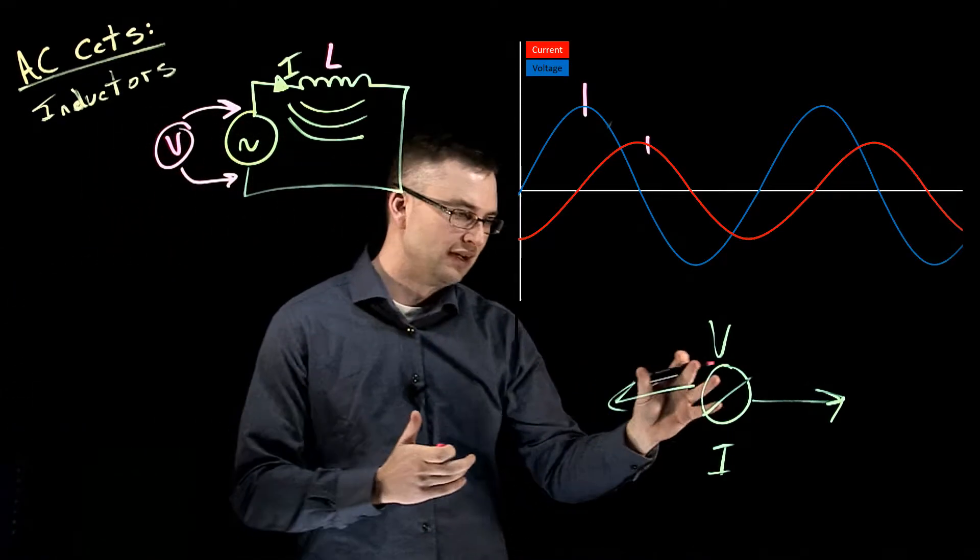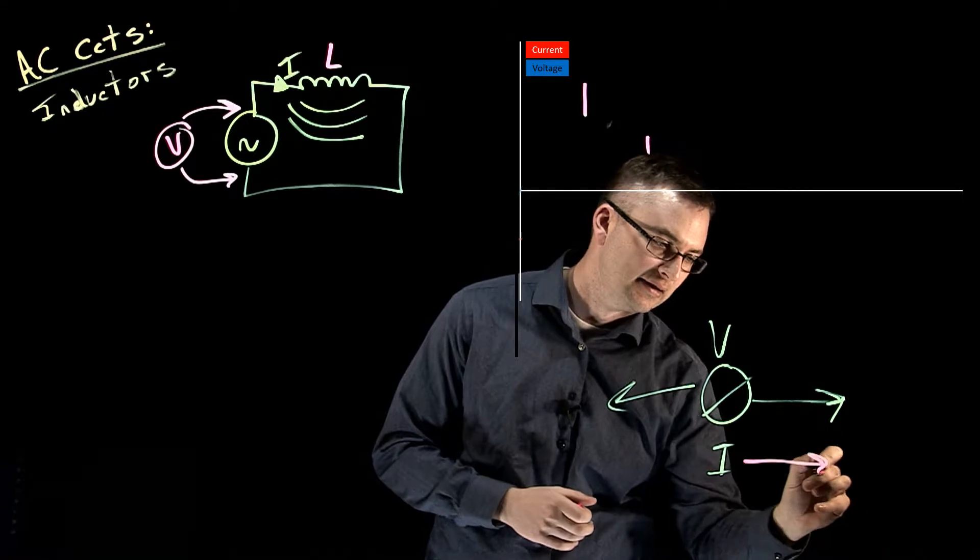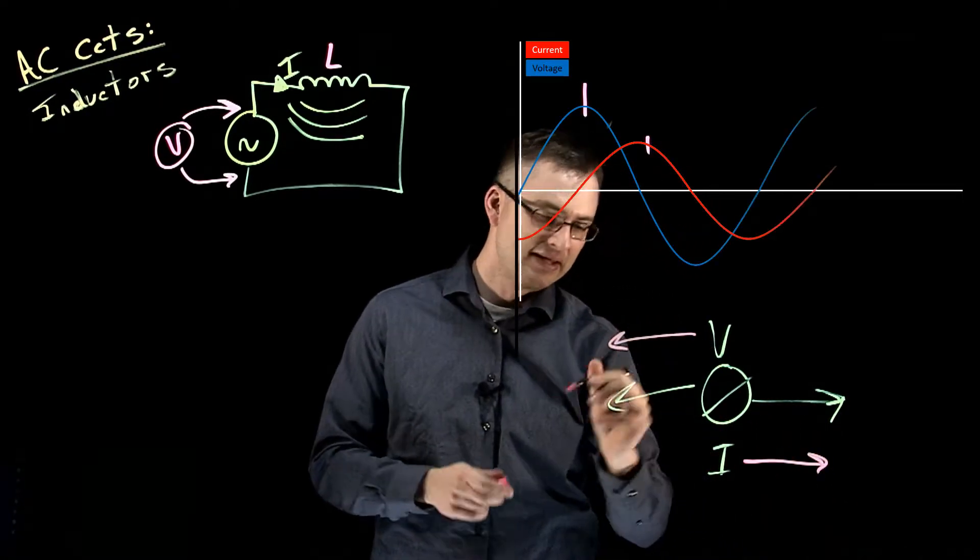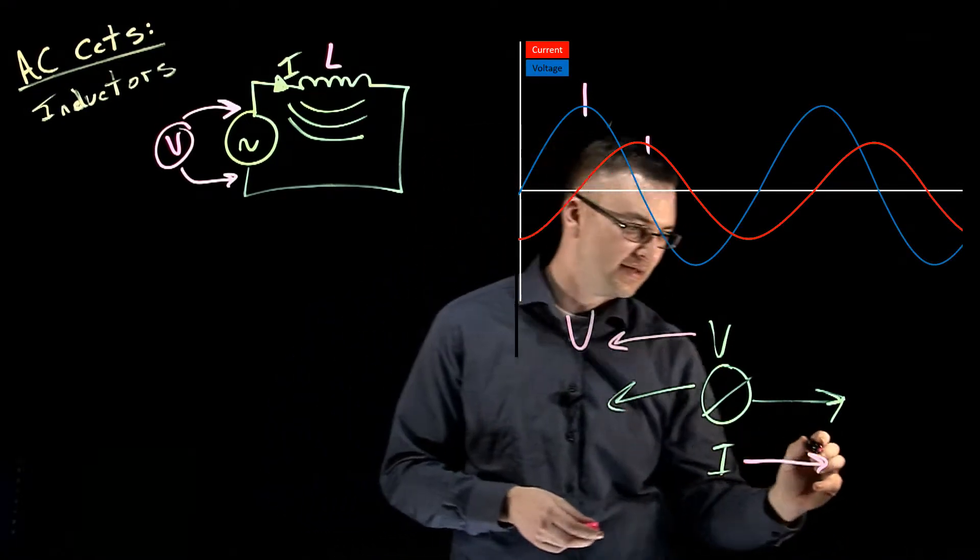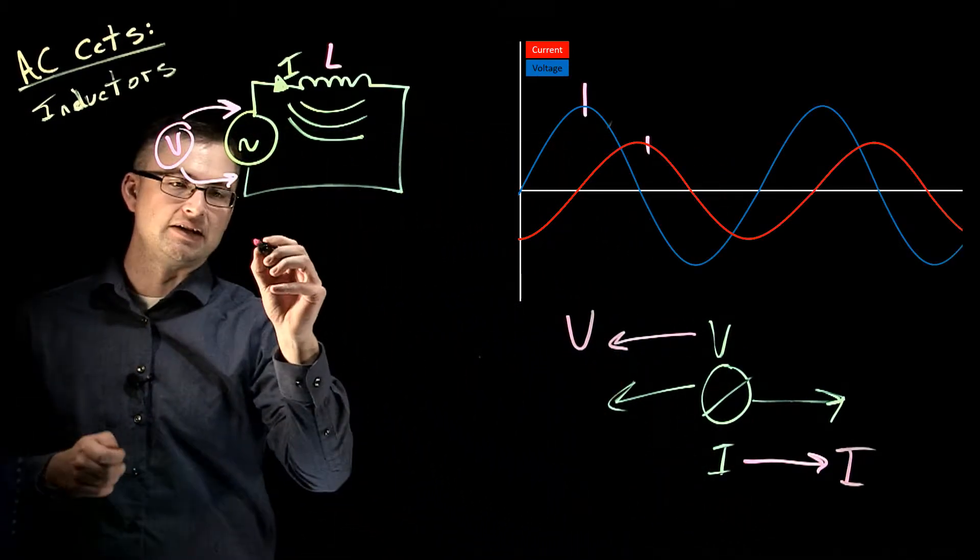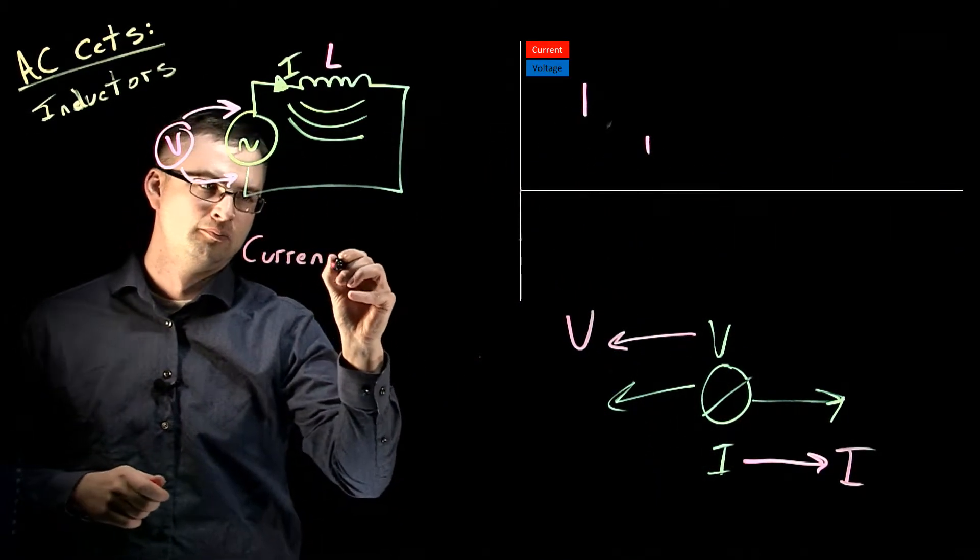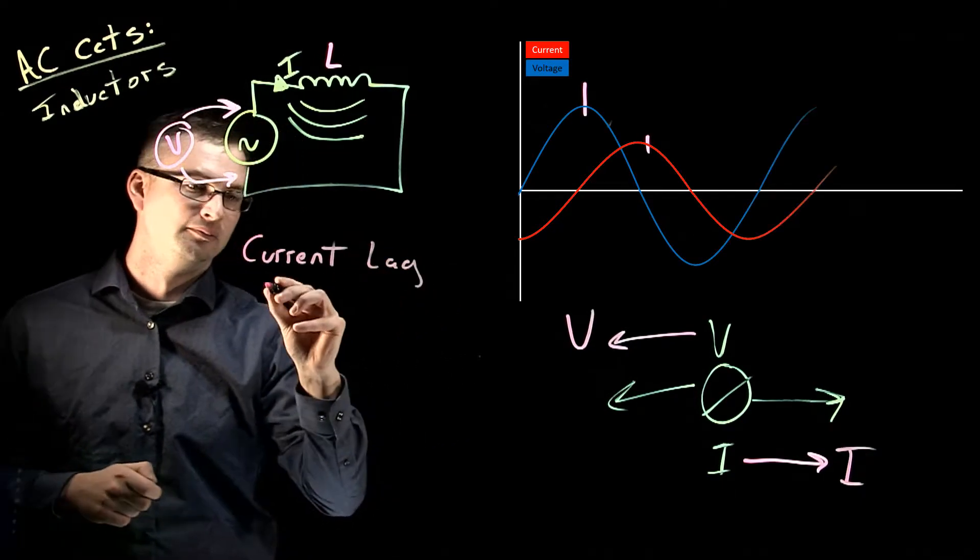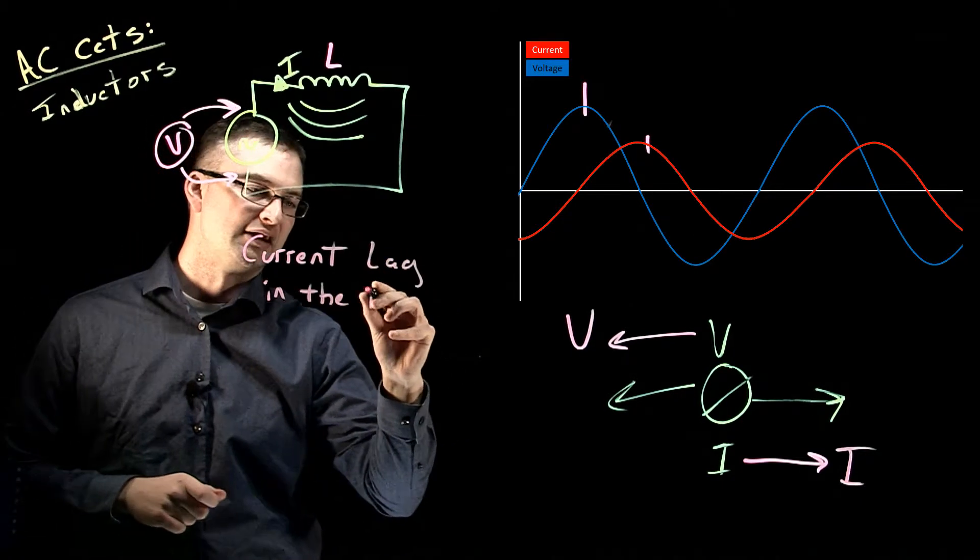So we can say that the current is lagging behind and the voltage is leading in this system. Therefore, we can make the statement that the current is going to lag in the inductive circuit.